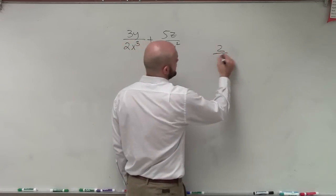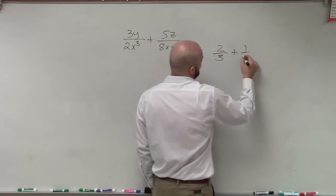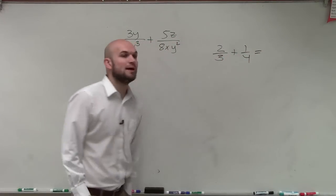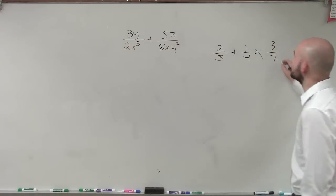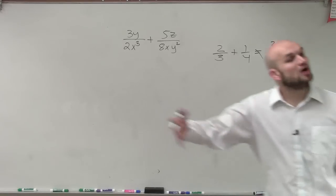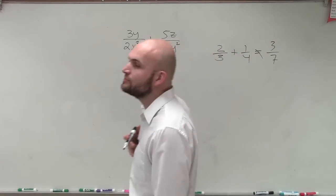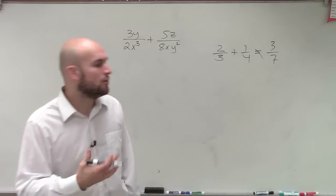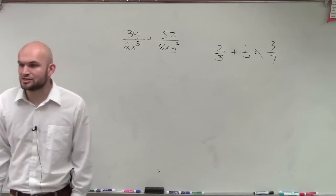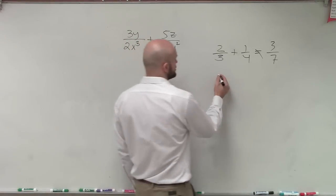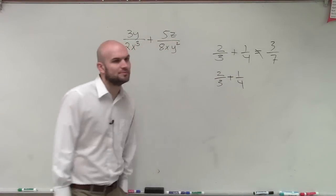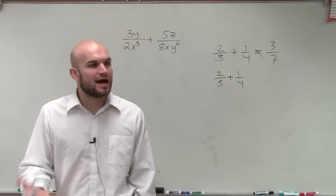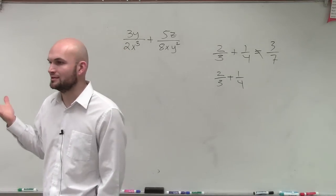Let's say 2 thirds plus 1 fourth. We remember we cannot add, we know that this does not equal 3 over 7. We multiply fractions across, we do not add fractions across. One of the big problems that a lot of students had with fractions was they take too much work. Why do they take too much work? To add and subtract you have to have common denominators.